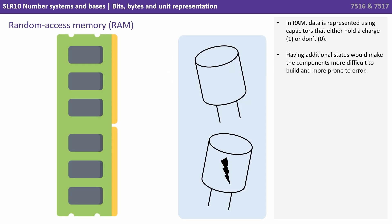In RAM, data can be represented using capacitors that either hold a charge — we could use a 1 to represent that — or don't, in which case we could use a zero. Having additional states would make the components more difficult to build and more prone to error.